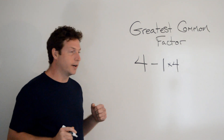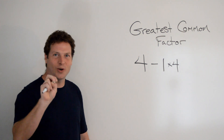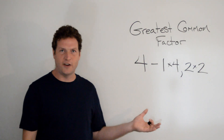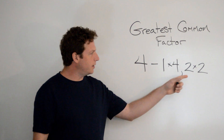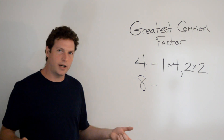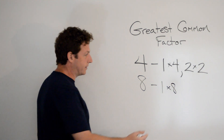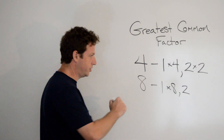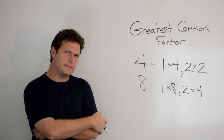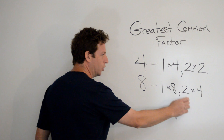We always know that 1 is a factor. What other two numbers can we multiply together to make 4? That's right, 2 and 2. So the factors of 4 are 1, 4, and 2. Now, what are the factors of 8? We have 1 and 8. Another factor is 2 times 4, so 2 and 4. The factors of 8 are 1, 8, 2, and 4.